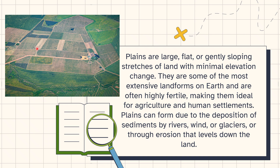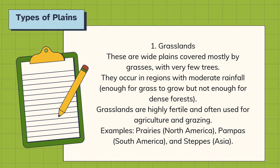Sometimes flat lands are highly fertile, sometimes they are not that fertile. The first type of plain is grasslands. Basically they are wide plains covered mostly with grasses and very few trees. It is good for agriculture if the climate supports that grassland — if there is rainfall, or if that area is near a river source — then these grasslands are perfect for agriculture. It really depends on the climatic conditions and whether the area has a nearby water source.